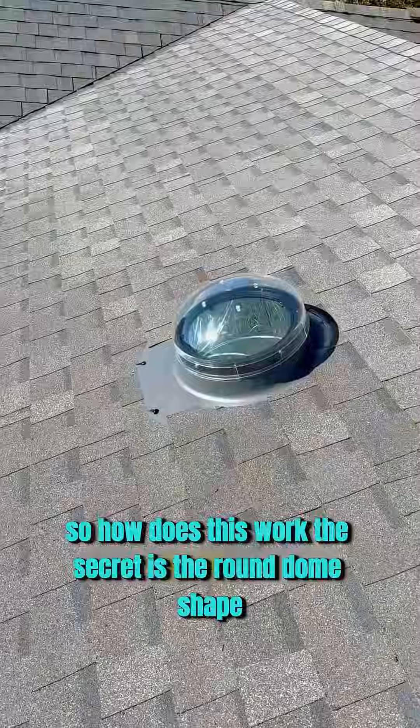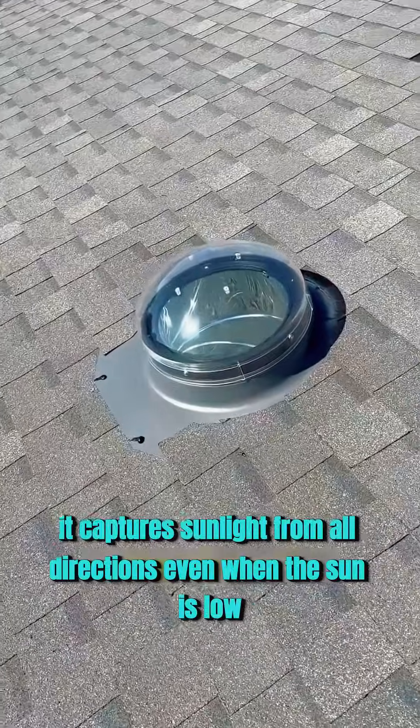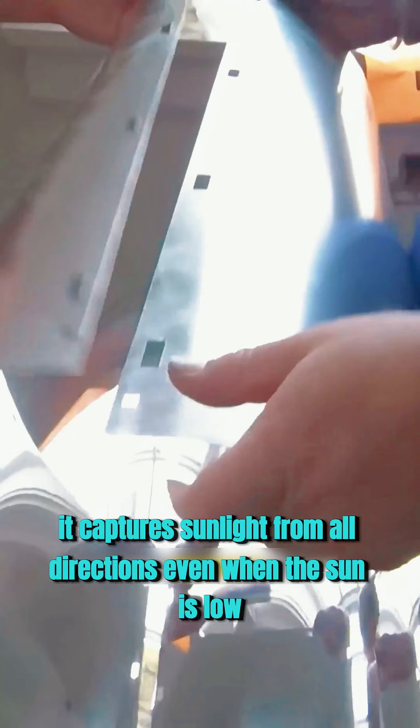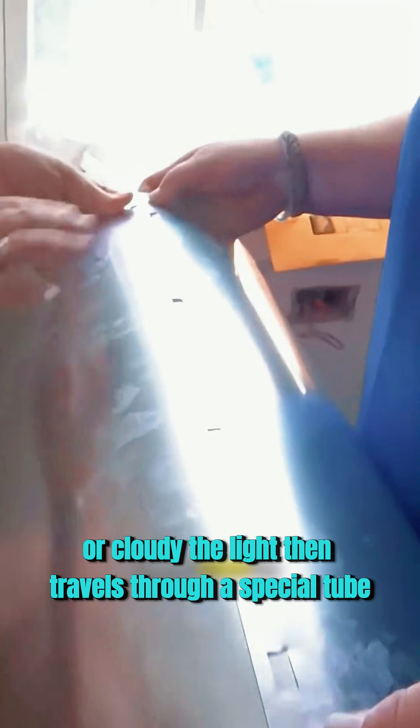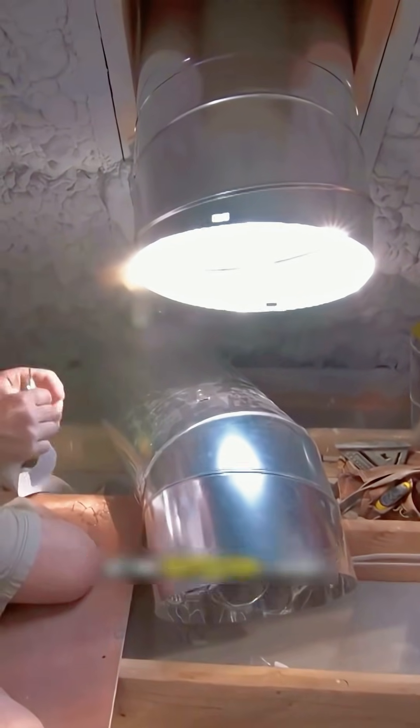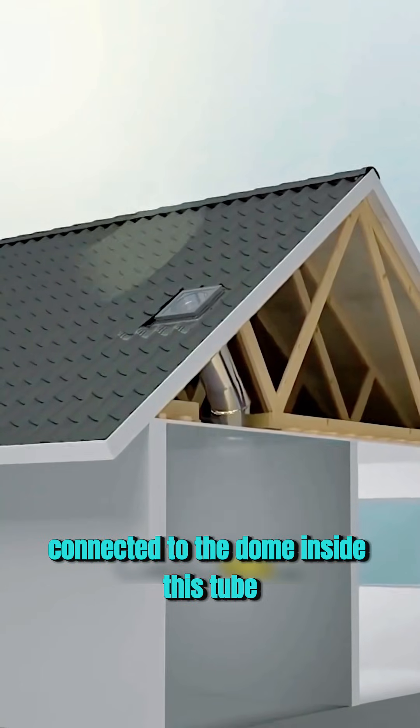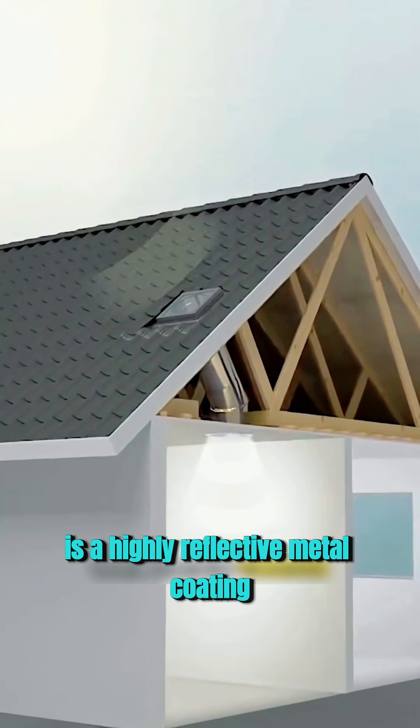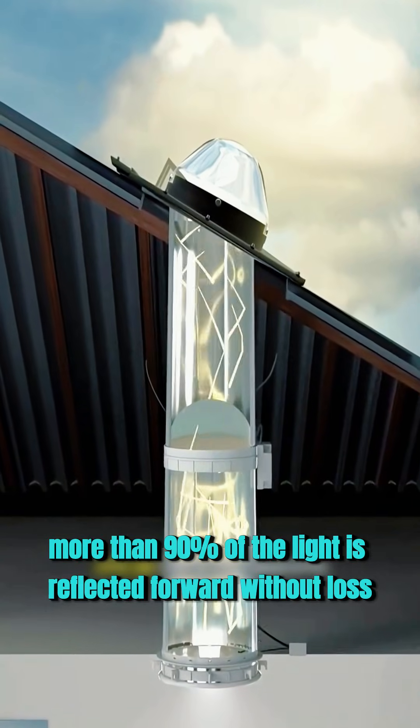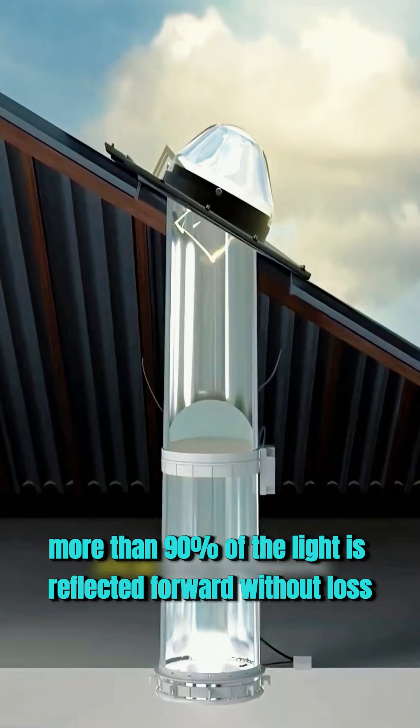So how does this work? The secret is the round dome shape. It captures sunlight from all directions, even when the sun is low or cloudy. The light then travels through a special tube connected to the dome. Inside this tube is a highly reflective metal coating. More than 90% of the light is reflected forward without loss.